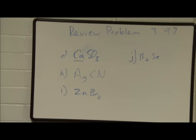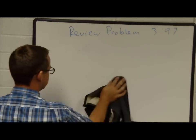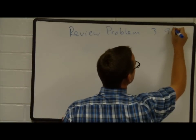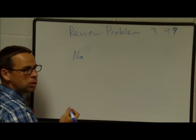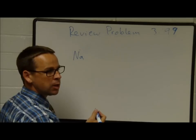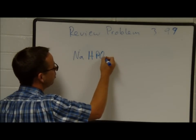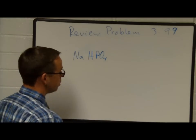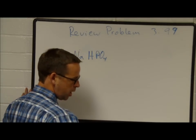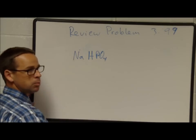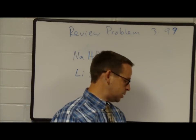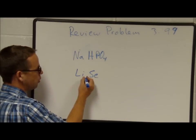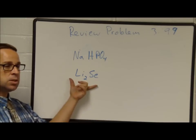Problem 399: Write the formula for the following. Sodium monohydrogen phosphate: the phosphate ion is PO₄³⁻, and the monohydrogen phosphate ion is HPO₄²⁻. This is Na₂HPO₄, sodium monohydrogen phosphate. Lithium selenide: selenide has a minus 2 charge, lithium has plus 1, so we need two lithiums: Li₂Se.